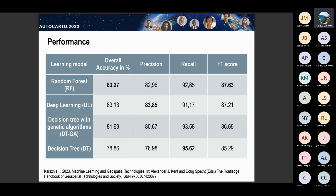It appeared that was actually a very good idea because we got very good results with each of the models. As you can see, here we have the overall accuracy — though I would rather call it the agreement between the paper maps and the results, as it's more of a similarity or agreement between them. The agreement was best for random forests — the model mentioned in the previous presentation — but also for deep learning and decision trees with genetic algorithms the results are quite high. The F1 score is also quite high.